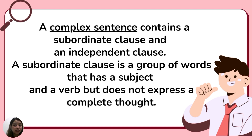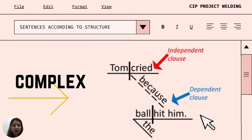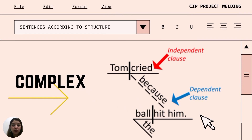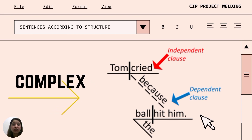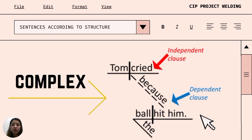A complex sentence contains a subordinate clause and an independent clause. A subordinate clause is a group of words that has a subject and a verb but does not express a complete thought. Here is an example: Tom cried because the ball hit him. 'Tom cried' is an independent clause. 'Because the ball hit him' is a dependent clause modifying the verb cried. Therefore, 'Tom cried because the ball hit him' is an example of a complex sentence.